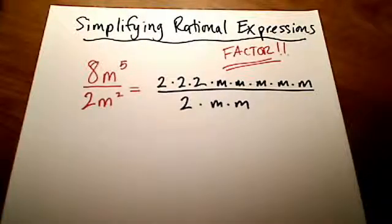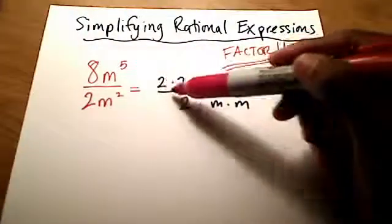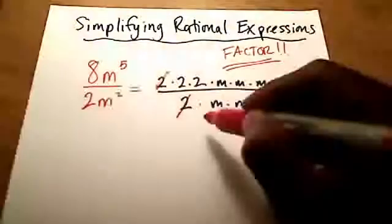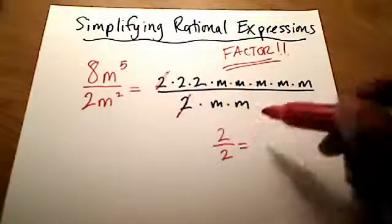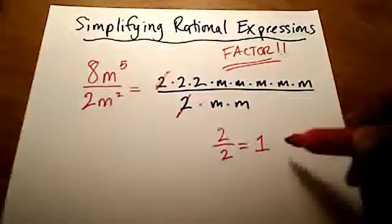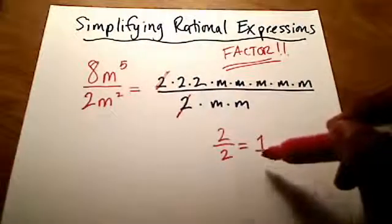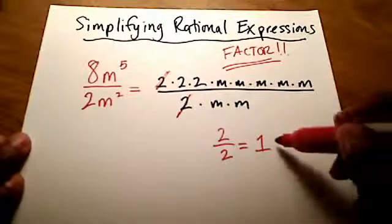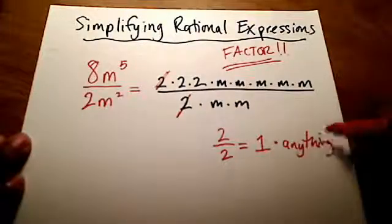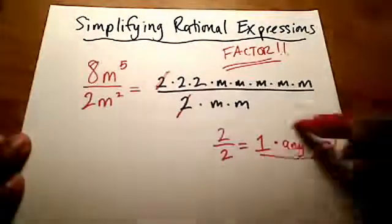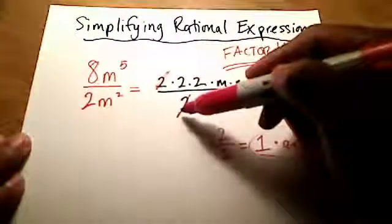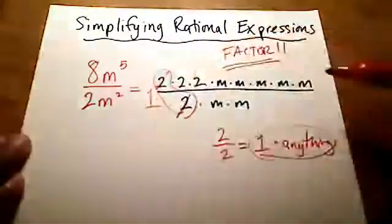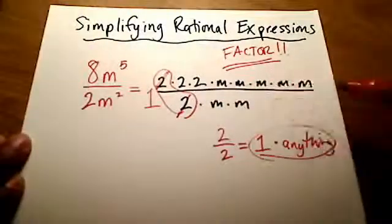Now there's a property in math that says anytime you have a number on top that is exactly the same as a number on the bottom, you can cross them out. Why is that? If you have 2 on top and 2 on the bottom, any number divided by itself is always a 1 — that's called the inverse property. And if you multiplied 1 times anything, it doesn't change. So when you cross these out, they really just turn into a fancy 1. That's the identity property.